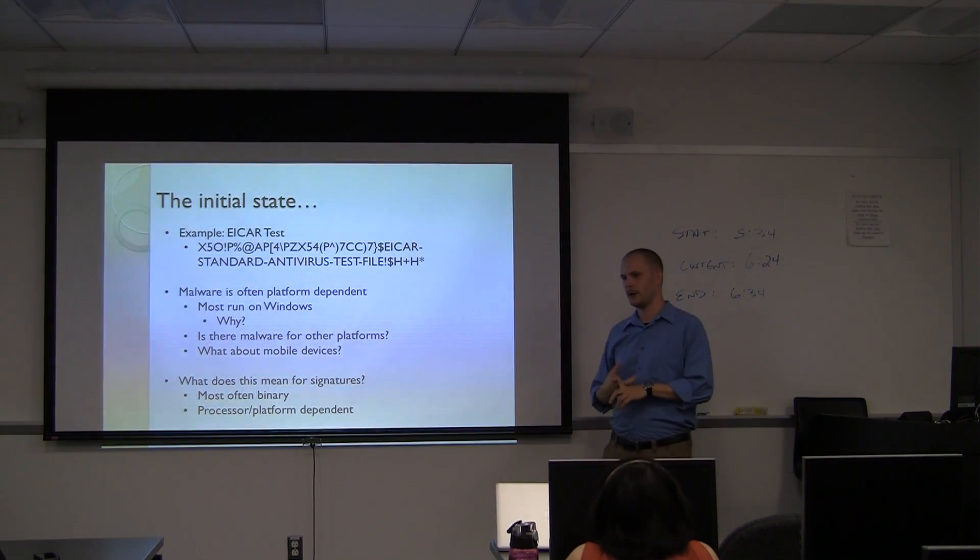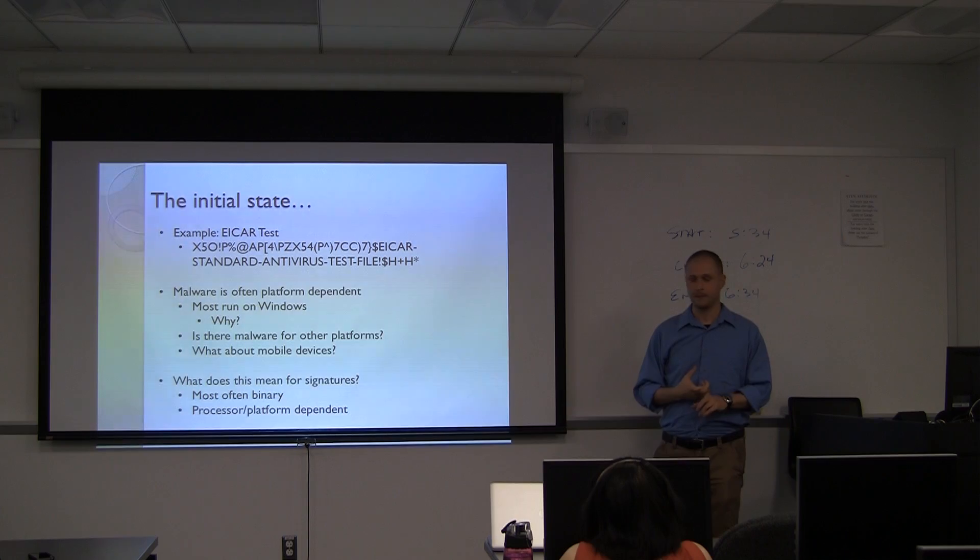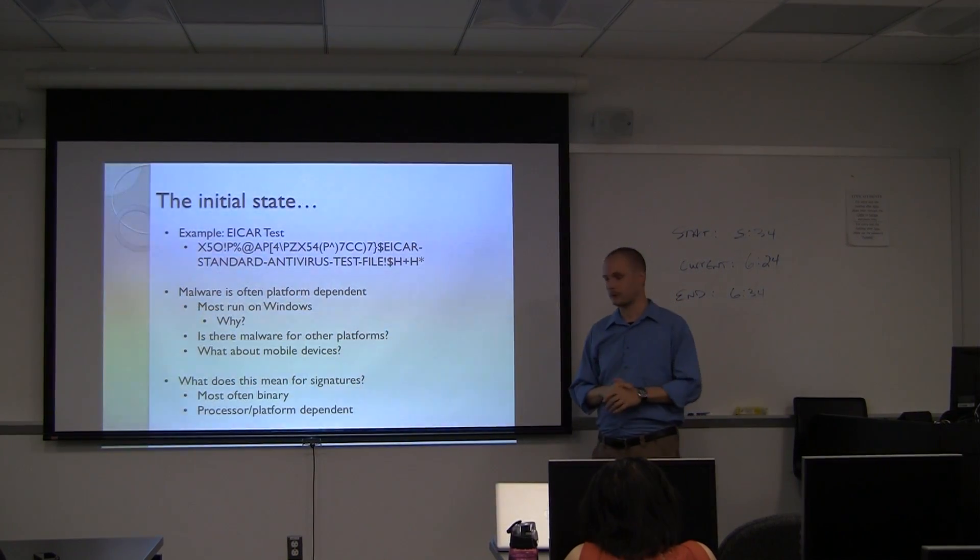And that's for two reasons. One, proprietary software authors don't like to give away their secret sauce. And then two, it's often faster for the machine. When you're dealing with 50,000 to 100,000 signatures, you want to be as quick as possible. So that's why it's binary.